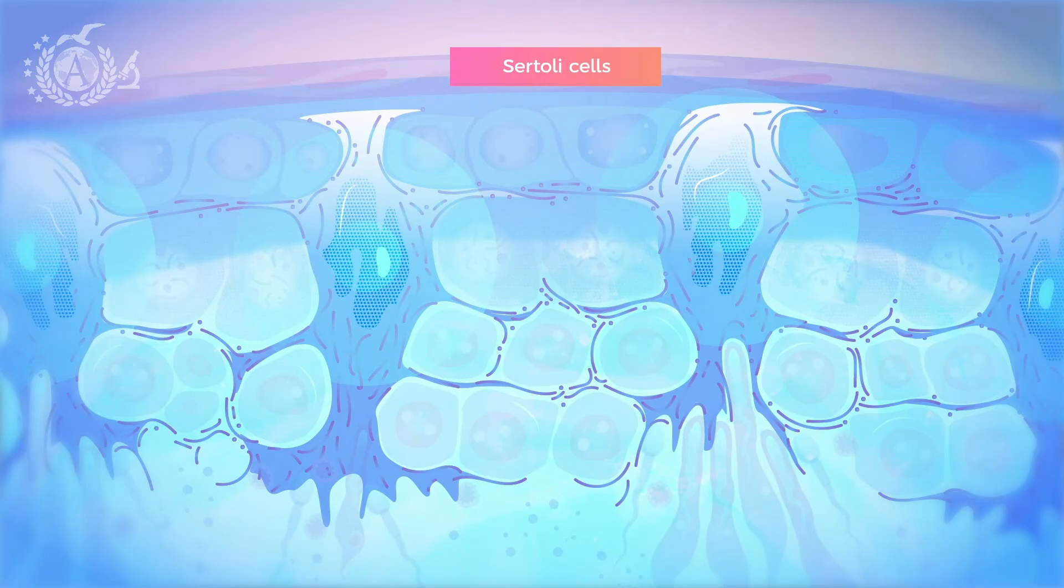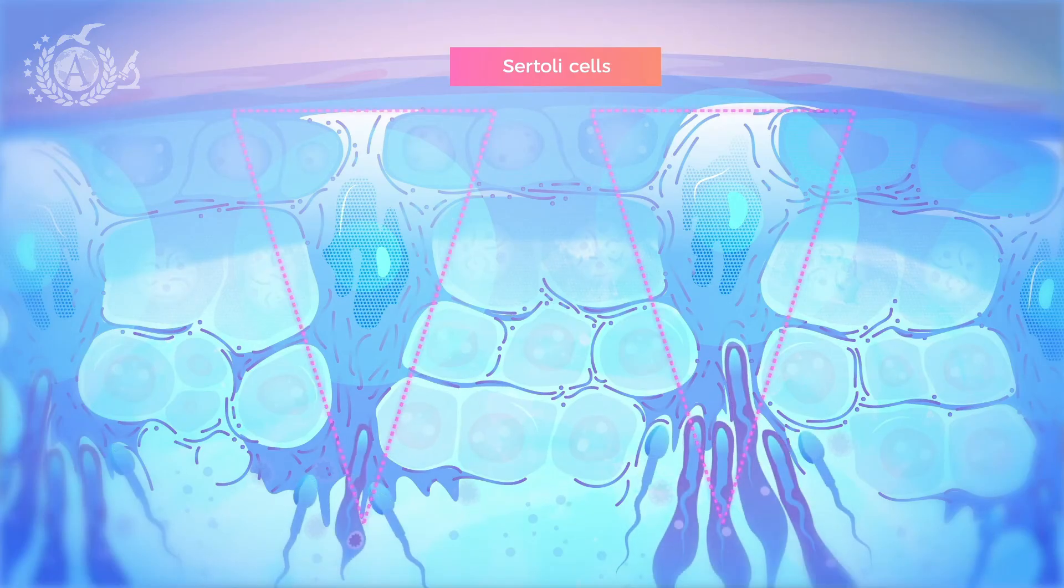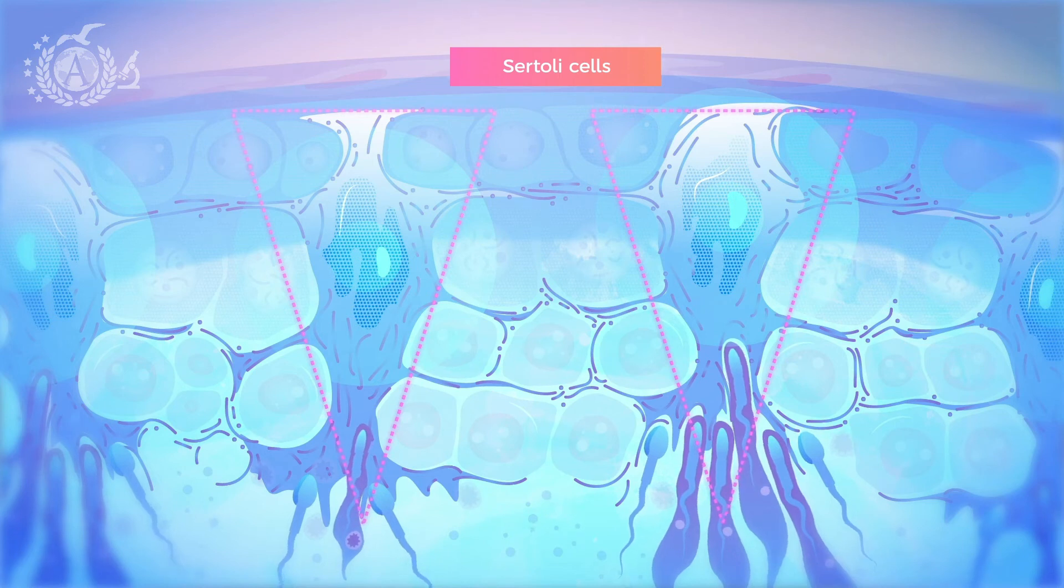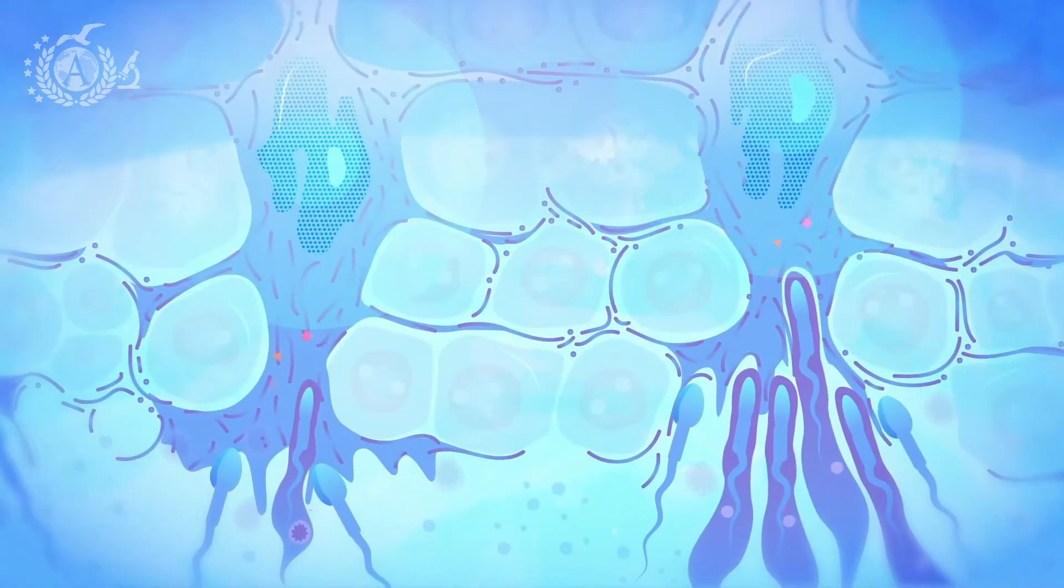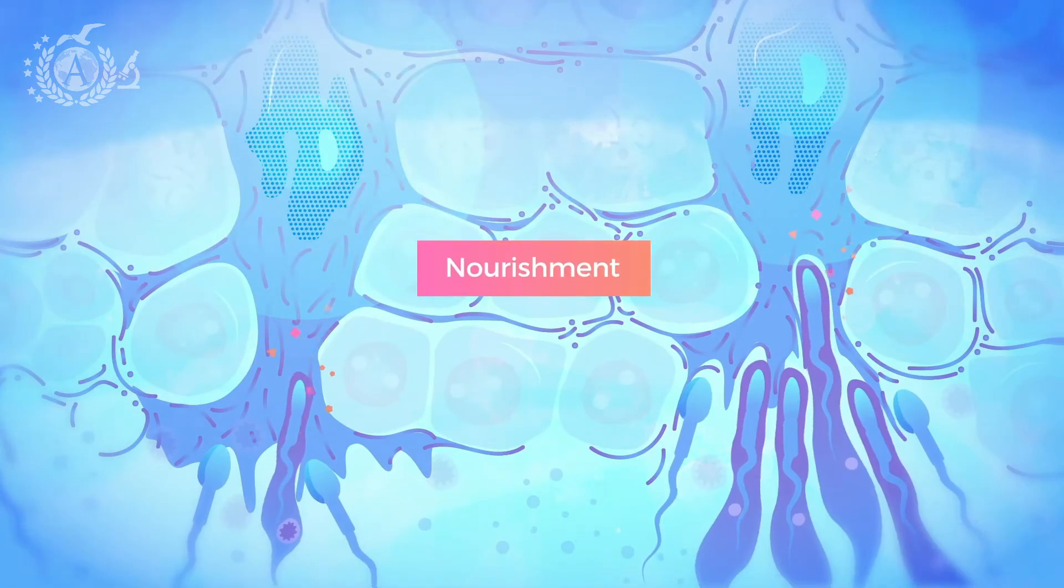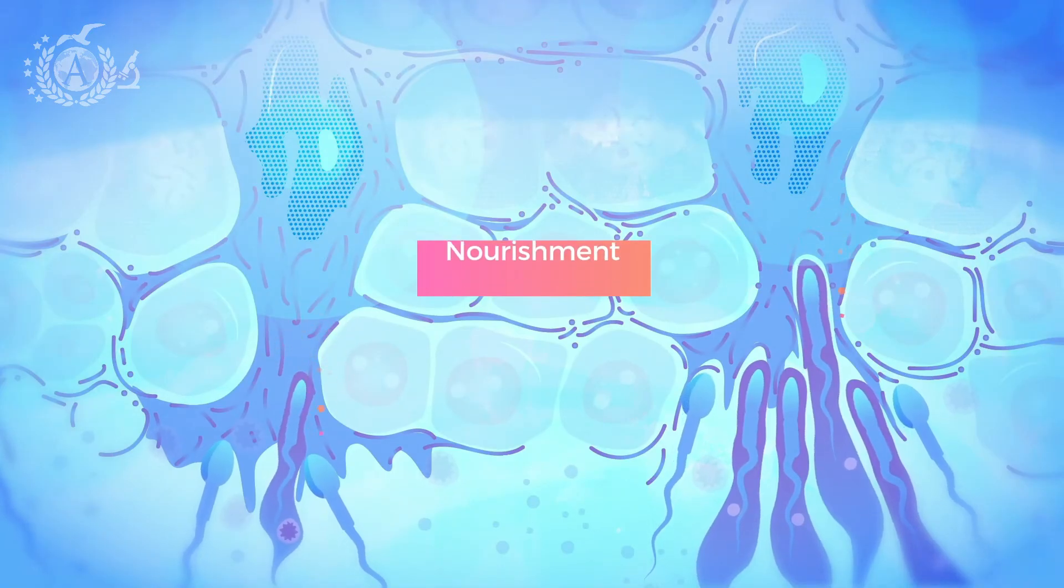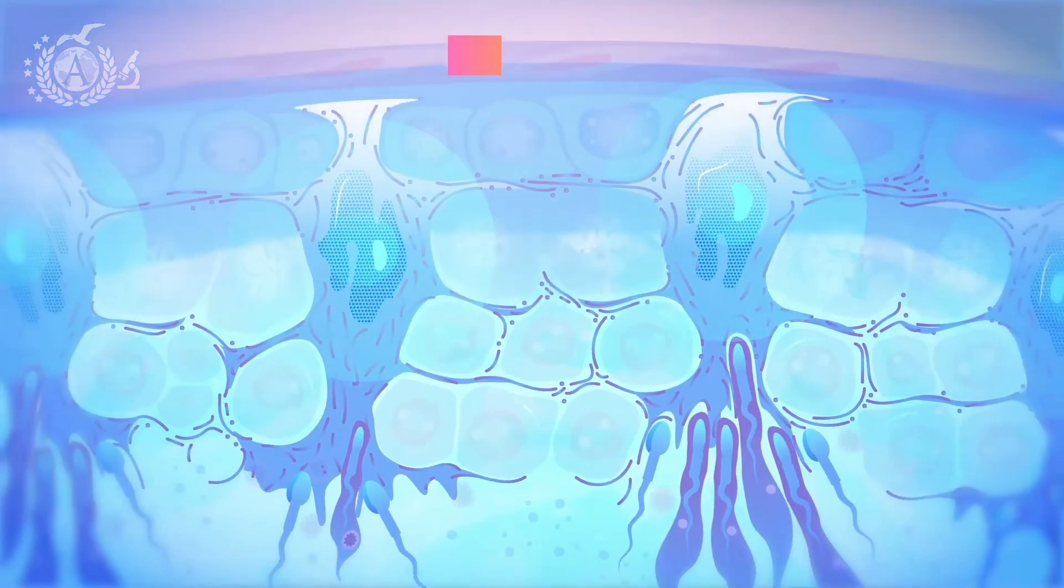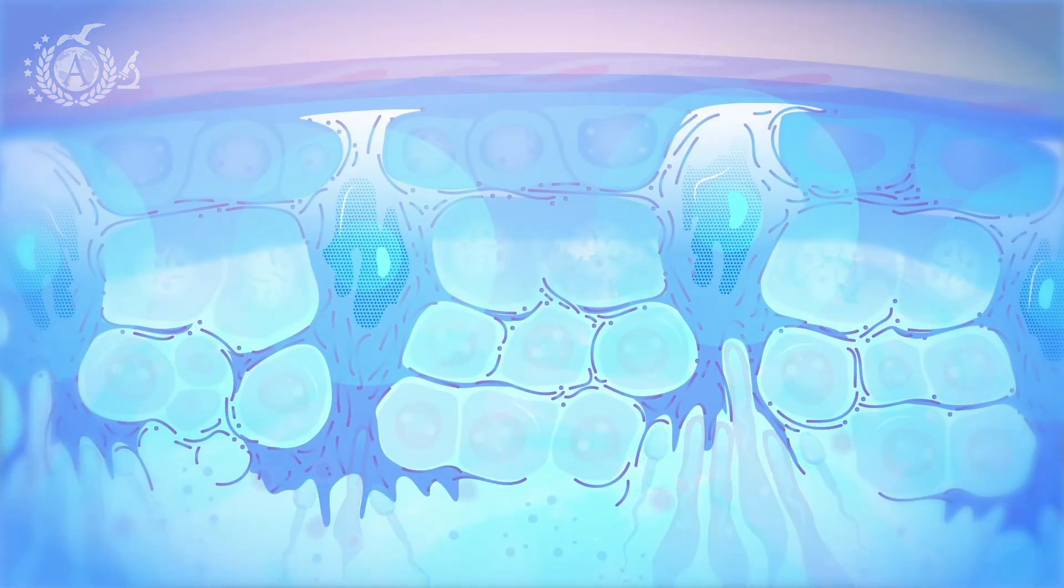Structurally, they are tree-shaped, with the apex pointing towards the lumen of the tubule. Numerous germ cells adhere to this apex. This contact is essential from a physiological point of view, as it allows the nourishment of germ cells, which otherwise could not take place.